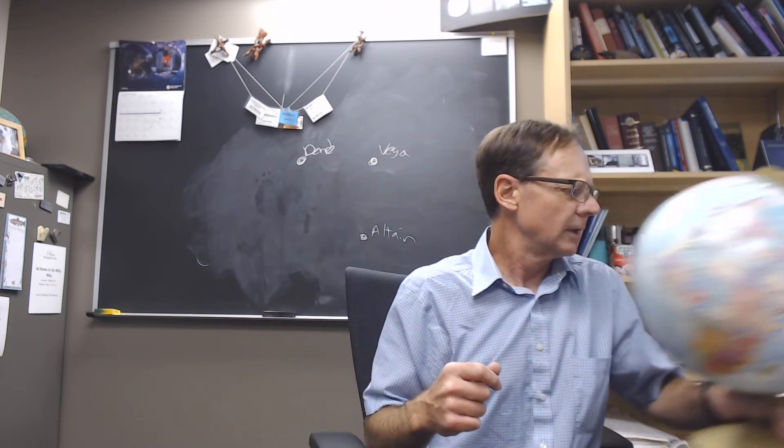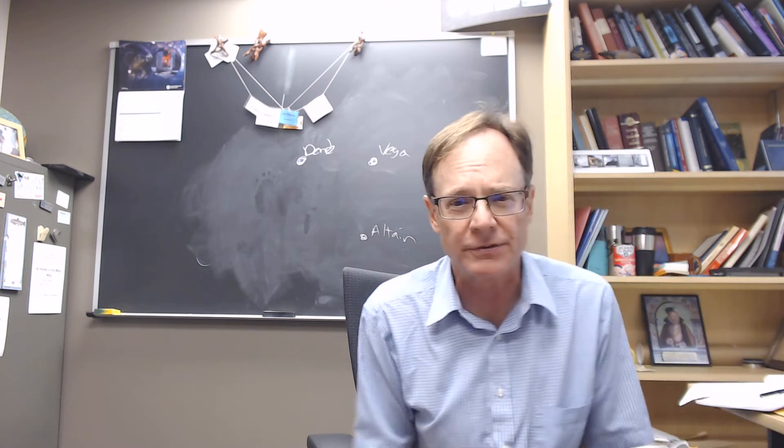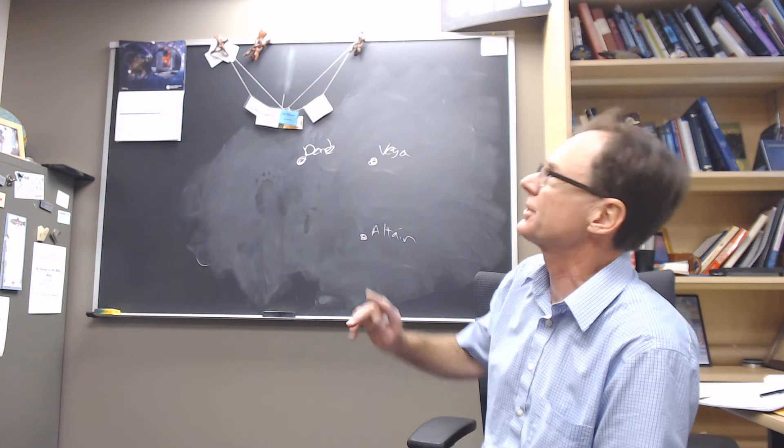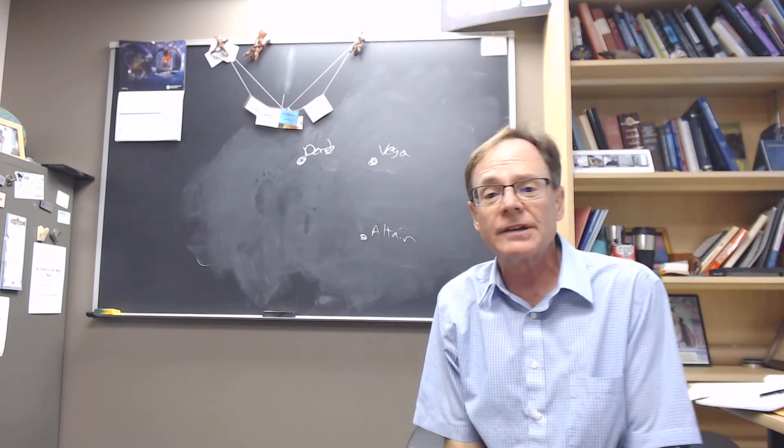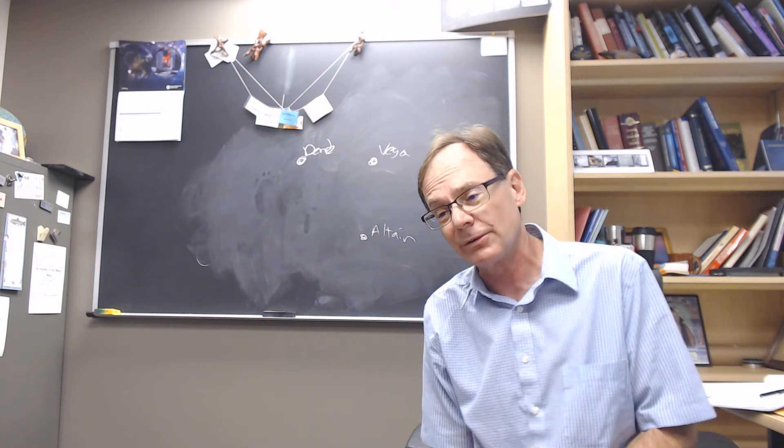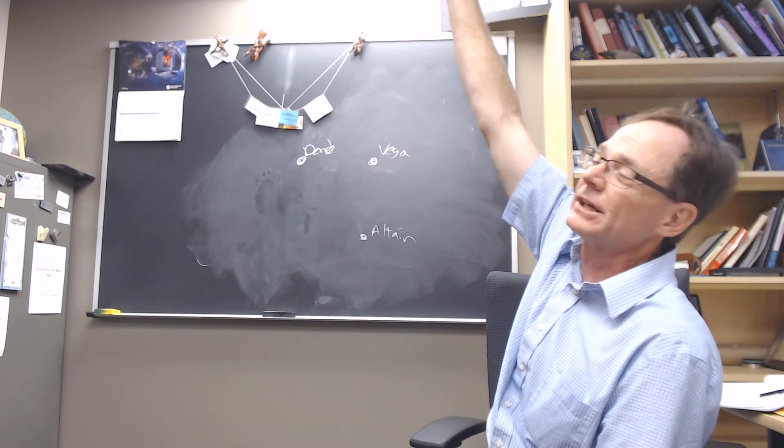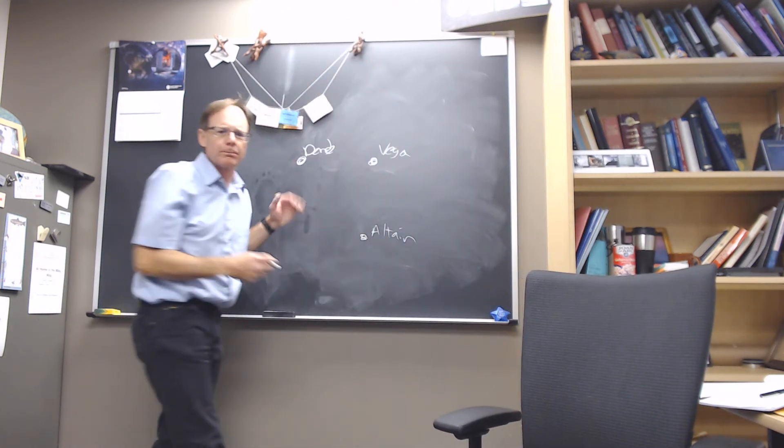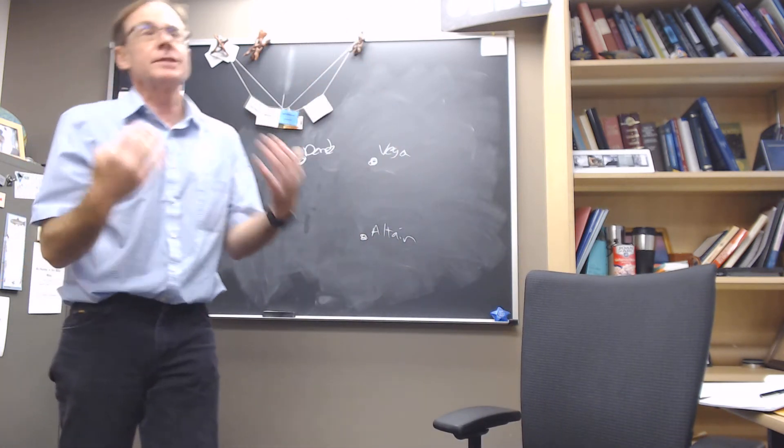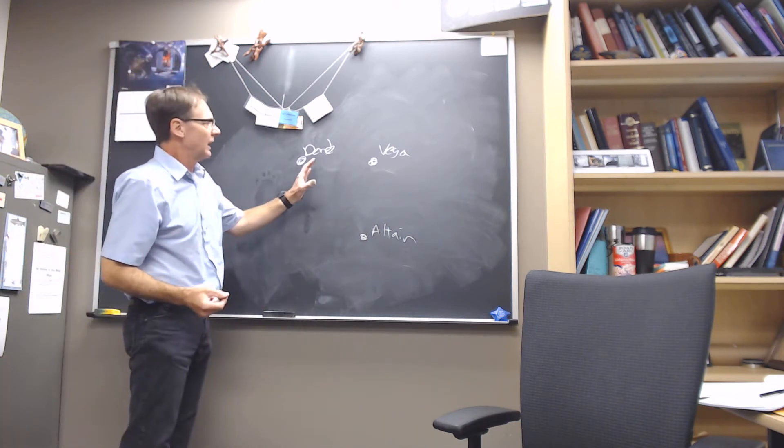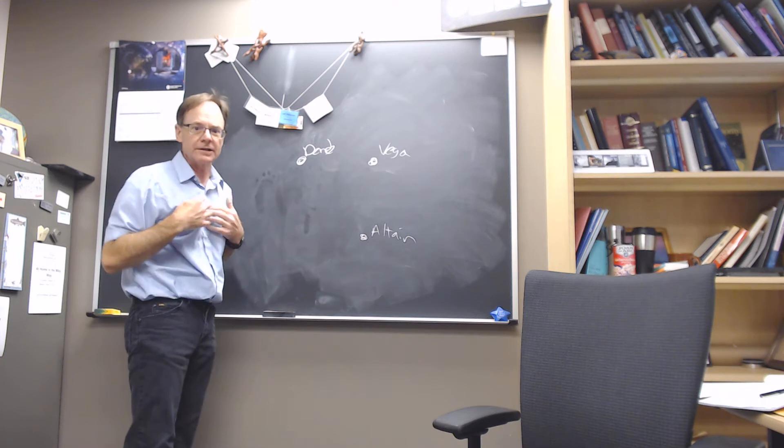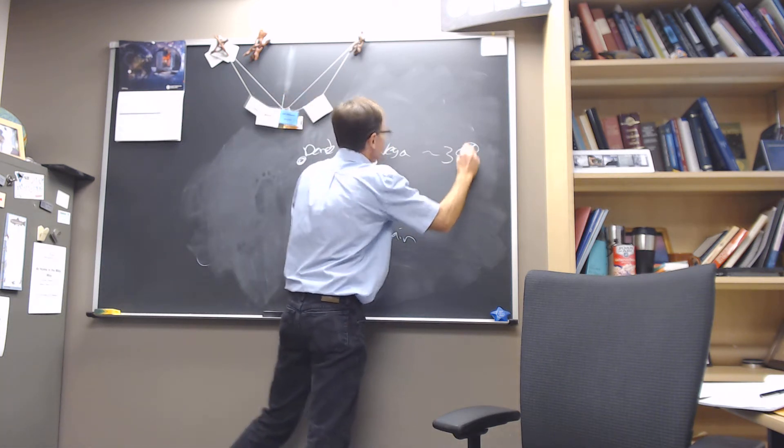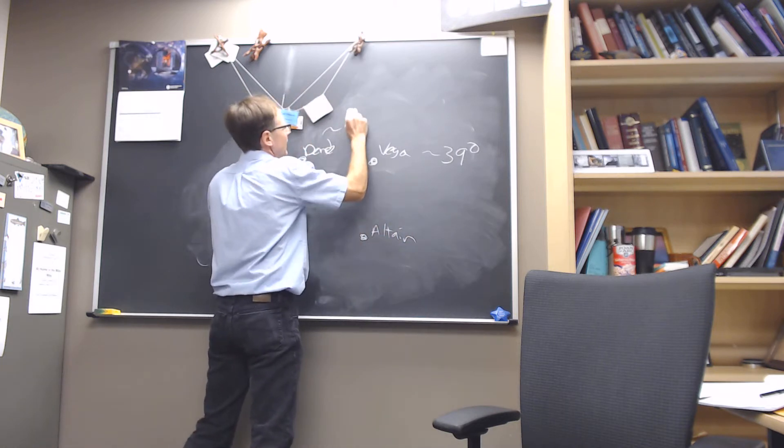So here in Decorah we have a latitude of about 43.3 degrees north, plus 43.3 degrees. So that means plus 43.3 degrees would be about directly overhead for us. An object with a declination of around 43 degrees will pass through the point directly overhead that we call the zenith point. Deneb and Vega are two of the brightest stars. They are the two brightest stars that get within a few degrees of the zenith point for us here in northeast Iowa.